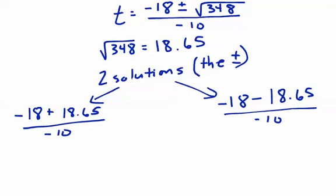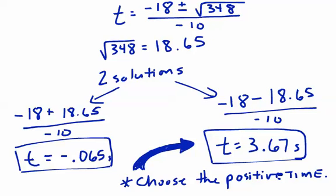The square root of 348 is 18.65. And notice the plus or minus gives us two solutions. One where we do plus, and one where we do minus. So negative 18 plus 18.65 divided by negative 10, and negative 18 minus 18.65 divided by negative 10. So if we solve these out, we get these two answers. Time is either negative 0.065 seconds, or time is positive 3.67 seconds.